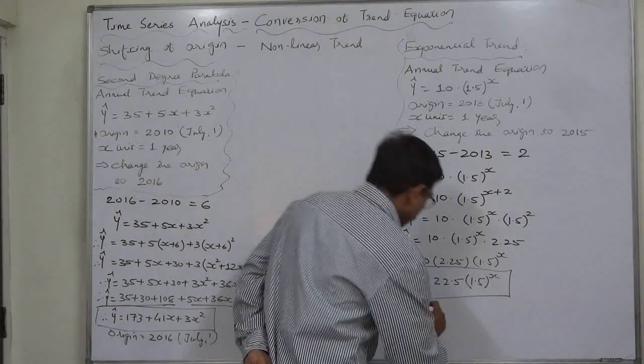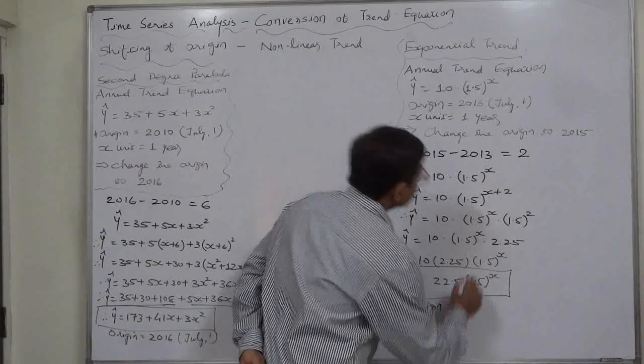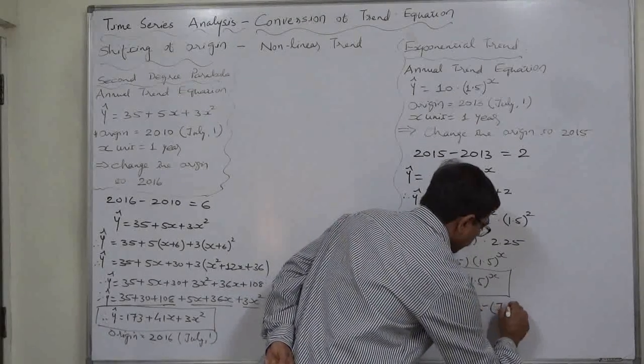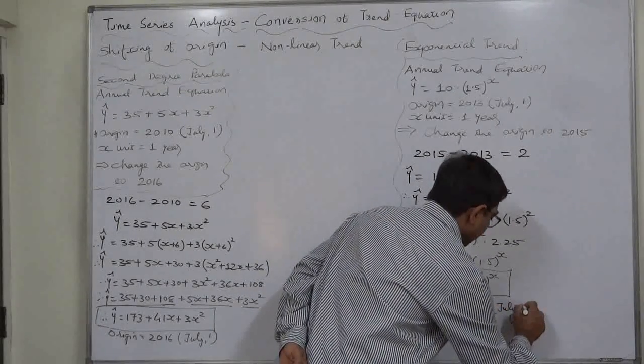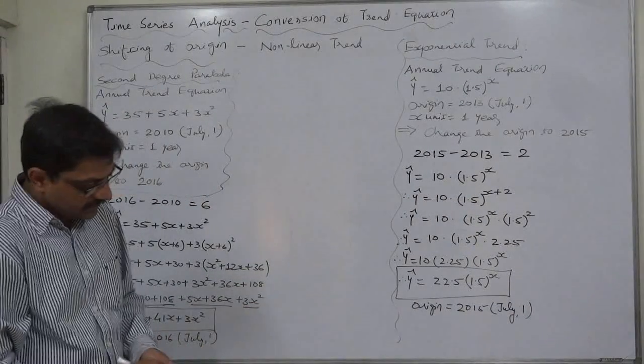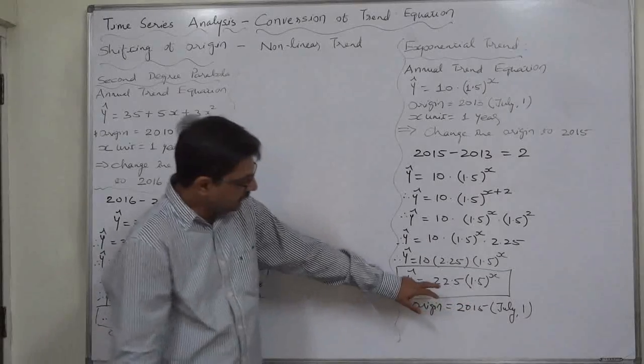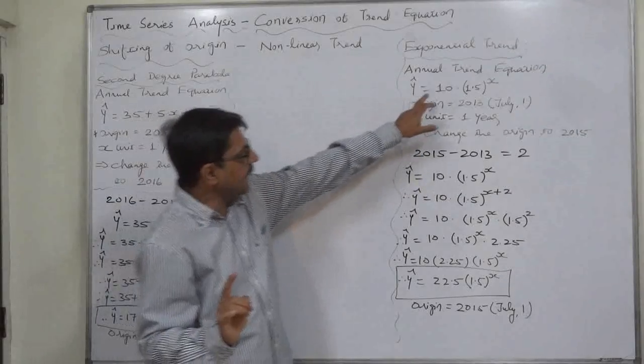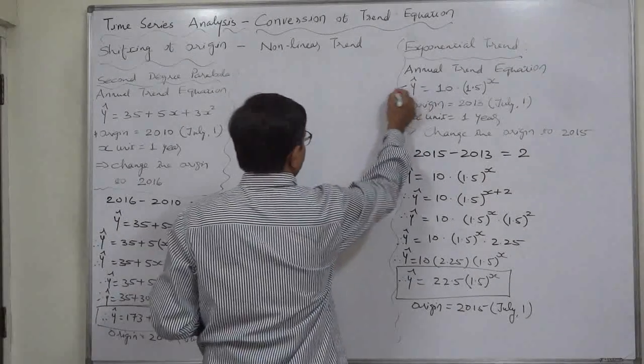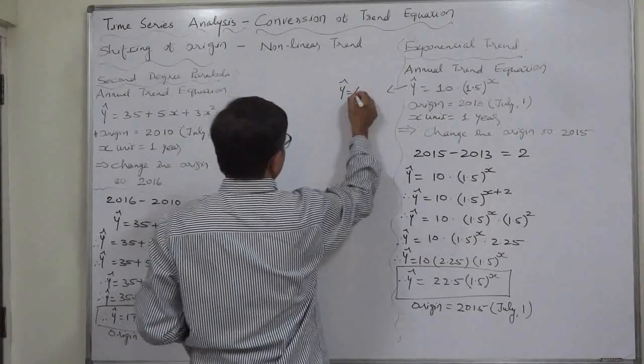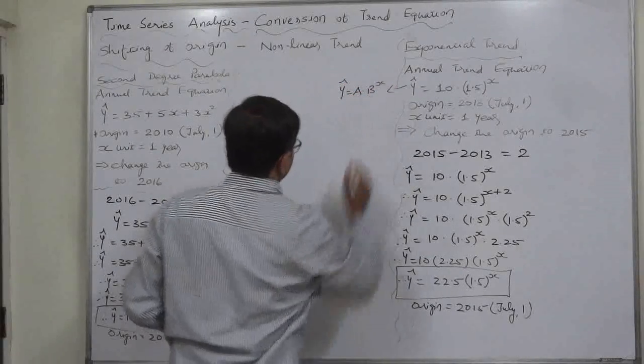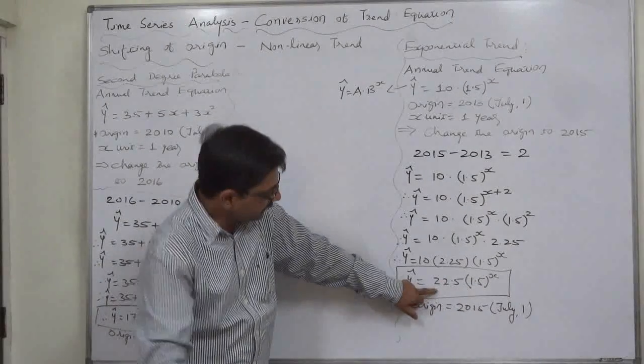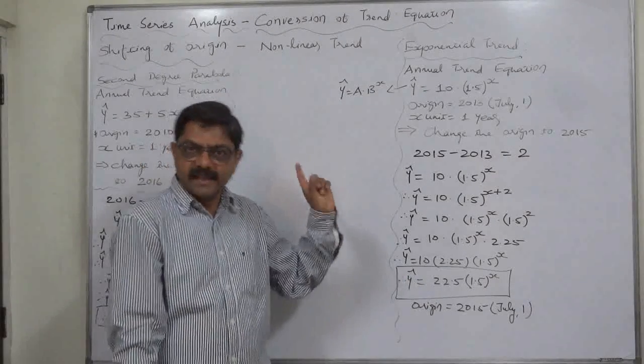Thus in this case we can observe that there is change in the value of constant a only. We know that the standard equation of exponential trend is a into b raise to x, so there is no change in b. There is change in the value of constant a only.